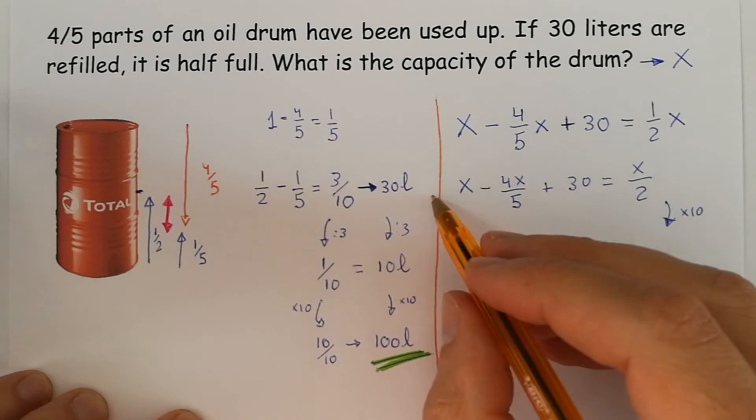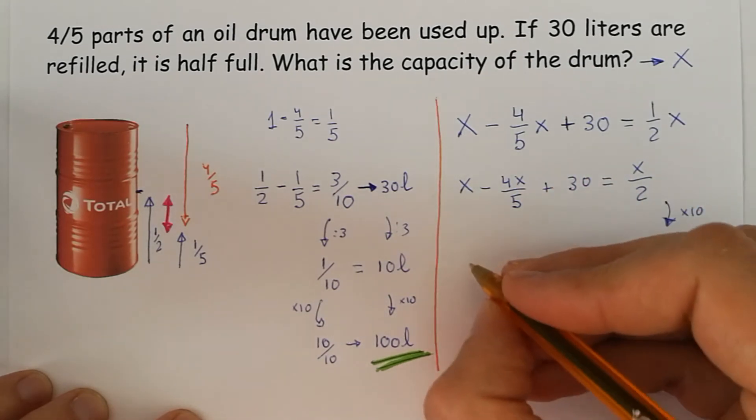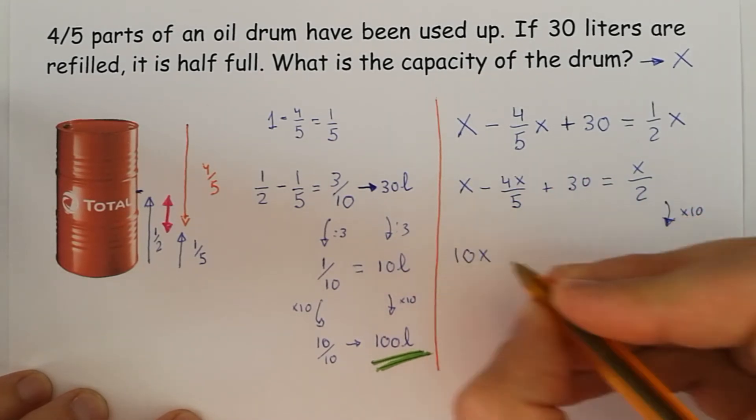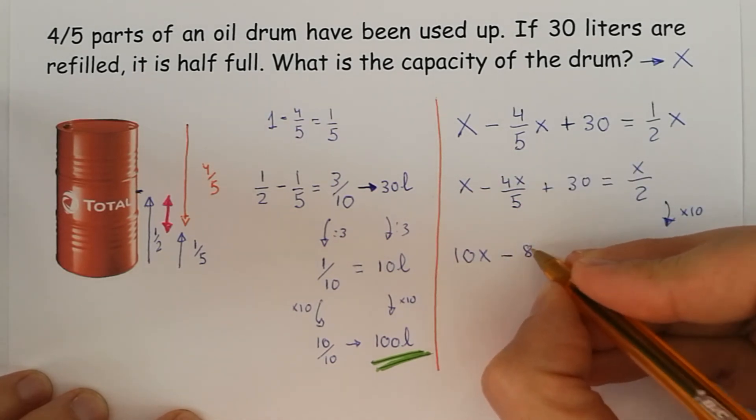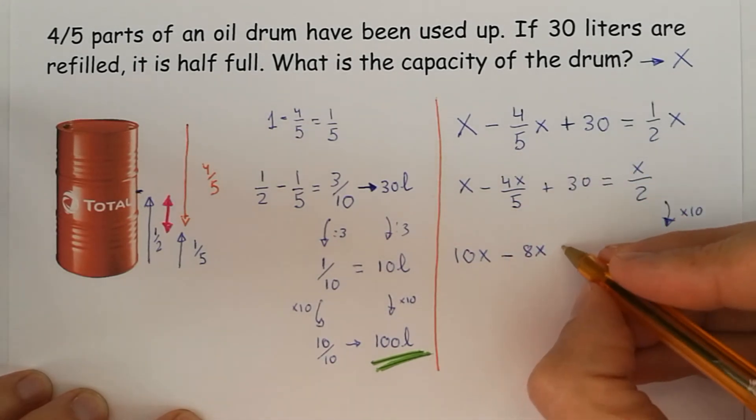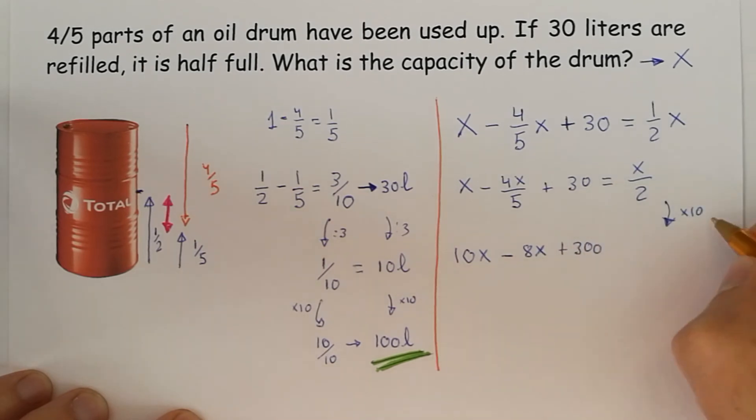To multiply this, we have to multiply every term, so we get 10X. Here is 40X over 5, that is 8X. Here we get 300. And finally, 10X over 2 is 5X.